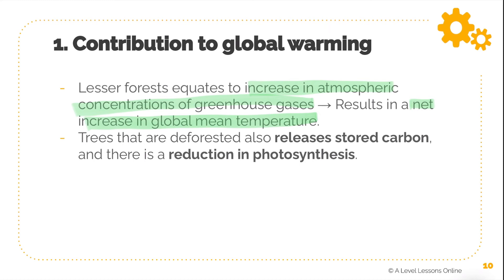Trees that are deforested also release stored carbon. Many trees, when they absorb carbon dioxide, store it before transpiration or other processes take place. The reduction in photosynthesis, along with this release of stored carbon, means a lot of carbon dioxide will be present in the atmosphere — which has a very negative consequence on climate change and global warming as a whole.